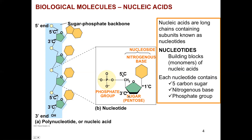The three prime and five prime refer to the carbon positions on the sugar. The three prime end is basically the alcohol — the OH group — and the five prime end is the carbon where the phosphate is attached. The bases differentiate between the different types of nucleotides, of which we have five. These nucleotides are joined together like any other polymer, losing water.